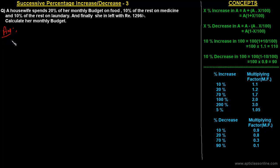The initial amount is not given — we have to calculate it. From the previous class we have seen that when we have to assume some value, it is better to assume in a multiple of hundred. So here, since we have to assume the monthly budget, you can assume it as 100x. This is the monthly budget.